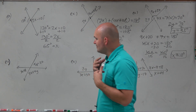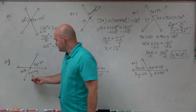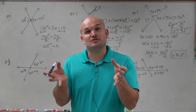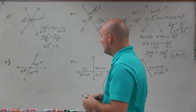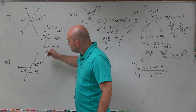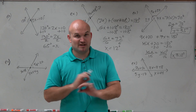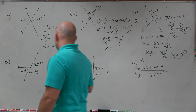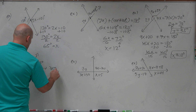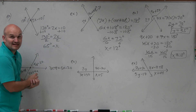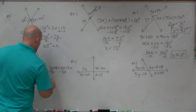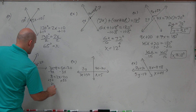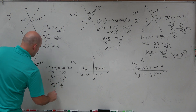Here is another example where I have x's and y's. I can see some angles have just x's, some have x and y, and some have just x's. To avoid confusion, let's focus on one variable — x seems best. I'll choose the two expressions that have nothing to do with y. Those two angles are vertical angles, so I set them equal: 3x plus 8 equals 5x minus 20. Subtracting 3x from both sides: 8 equals 2x minus 20. Add 20: 28 equals 2x. Divide by 2: x equals 14.